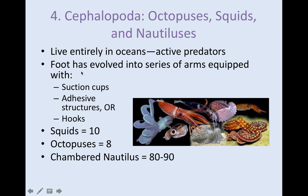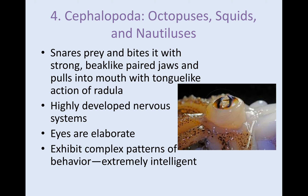Cephalopods live entirely in oceans. They are extremely active predators and pretty smart. Their foot has evolved into a series of arms with suction cups, adhesive structures, or hooks. Squids have 10, octopi have 8, and the nautilus has between 80 and 90. They can snare their prey with their tentacles and bring it up to their beak-like paired jaws. They have a very highly developed nervous system and extremely elaborate eyes with really good eyesight. They exhibit complex patterns of behavior and are extremely intelligent. Some octopi can camouflage themselves, changing the texture and color of their skin to blend in with their environment.